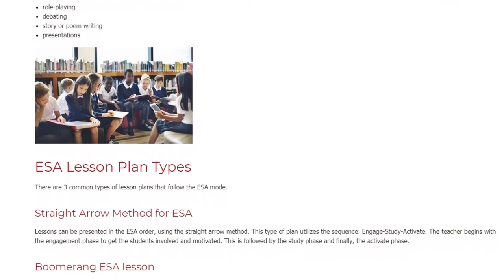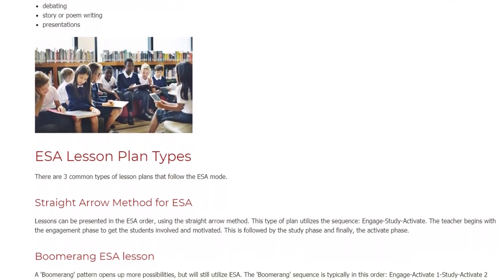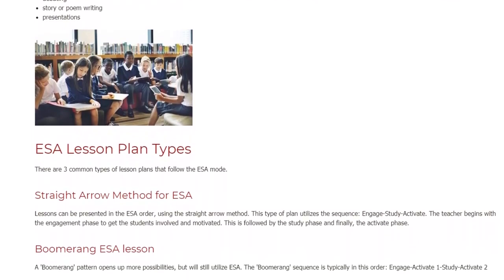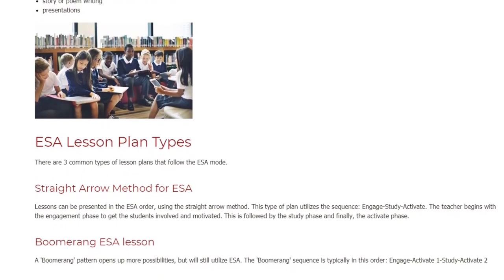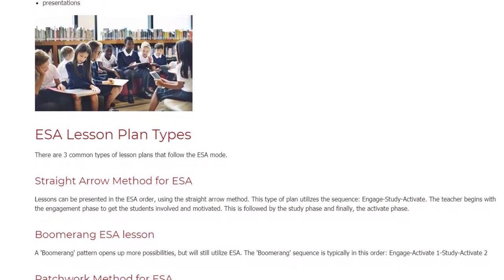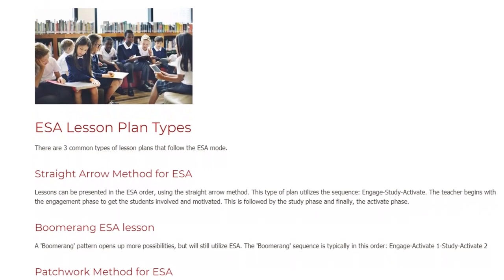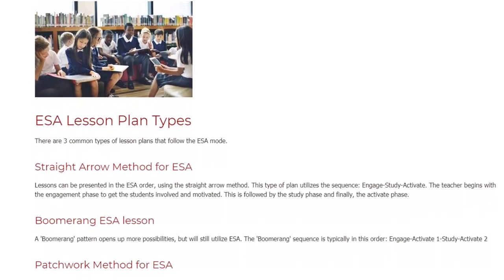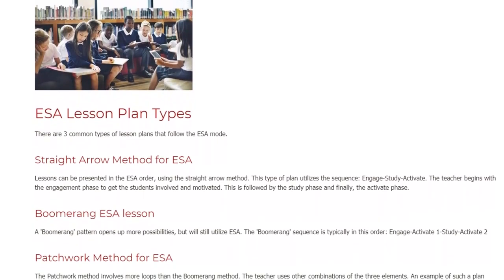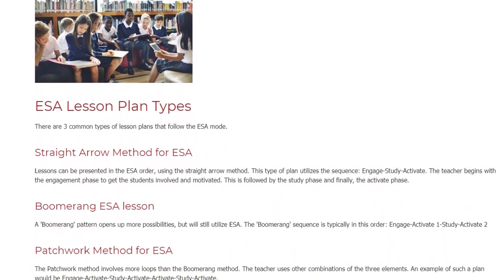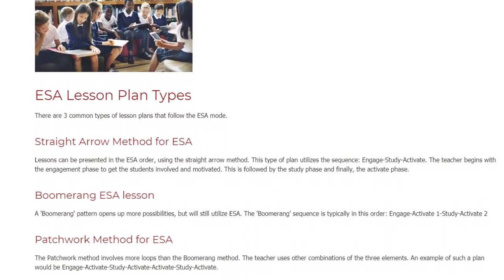Lessons can be presented in the ESA order using the straight arrow method. This type of plan utilizes the sequence: Engage, Study, Activate. The teacher begins with the engagement phase to get the students involved and motivated, followed by the study phase, and finally the activate phase.